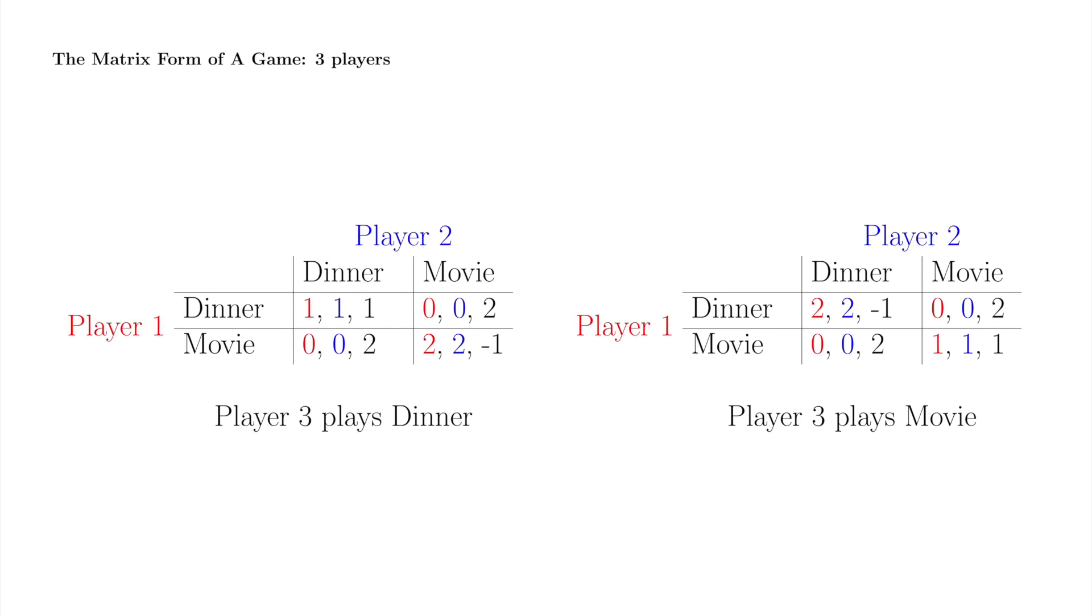There are no strong conventions about the order in which payoffs appear in the matrix with three players. In this example, for any given strategy triple, player 1's payoff, in red, is always denoted by the leftmost number, player 2's payoff, in blue, is always denoted by the middle number, and player 3's payoff, in black, is always denoted by the rightmost number.